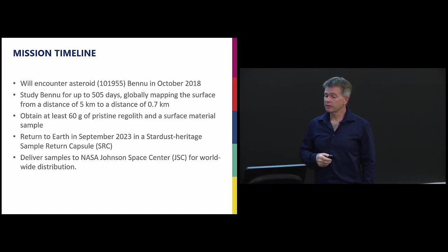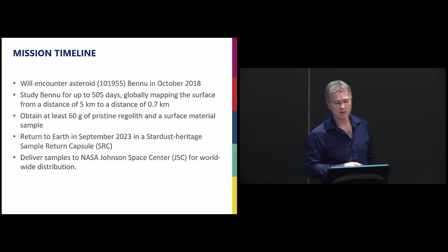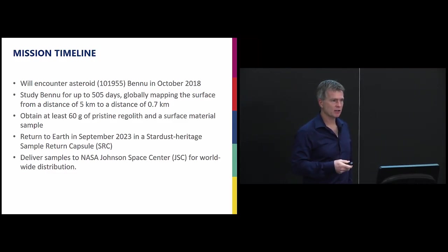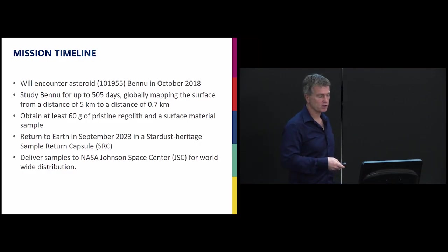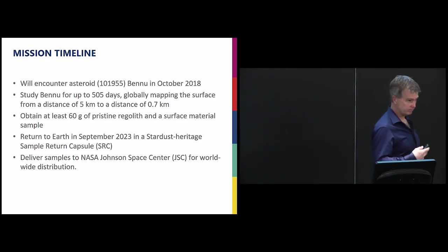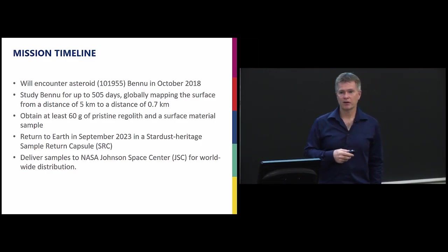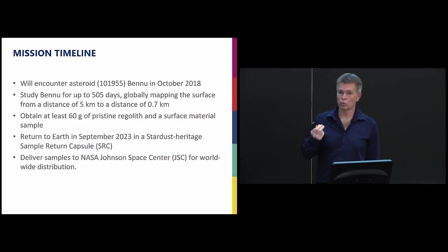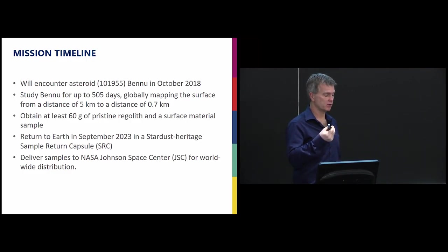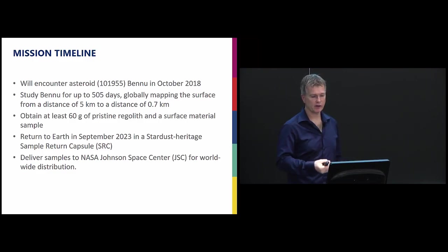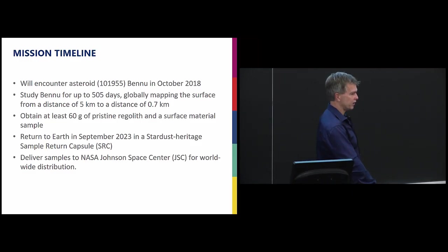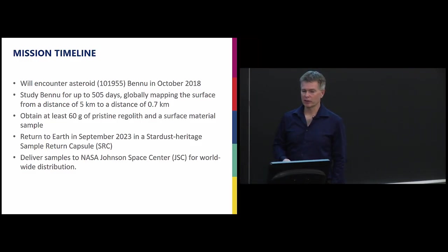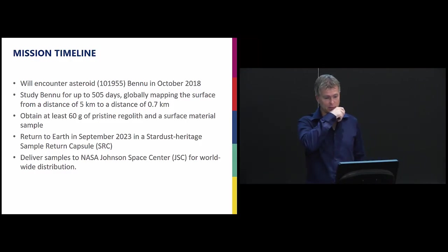So here's the timeline. October next year, we're going to start getting close enough to Bennu to actually start using these instruments in earnest. We're going to spend 505 days around Bennu, between five kilometers down to really 500 meters and below now, until we can understand where the safe spot is and the spot with the highest science value and probability of successfully grabbing a sample. And we're going to zip down, touch the asteroid for a short period of time and bring the sample back and get back to Earth.